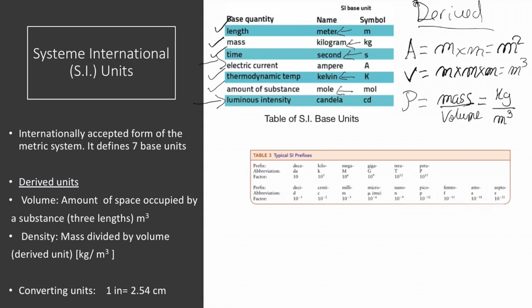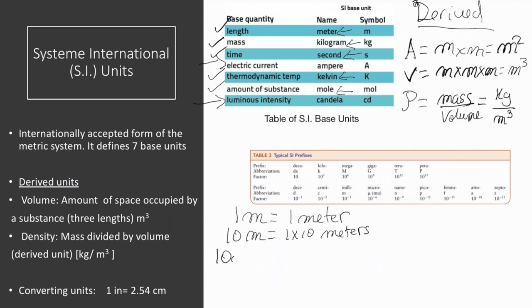We can also get smaller or bigger quantities than the base unit by including prefixes in the names and factors in the numbers. For example, we can have one meter written as one meter. If we want to represent 10 meters, we can write this with a factor of 10 meters. If we want to have 1000 meters, we can write this as one times 10 to the third, because 10 to the third is 1000.